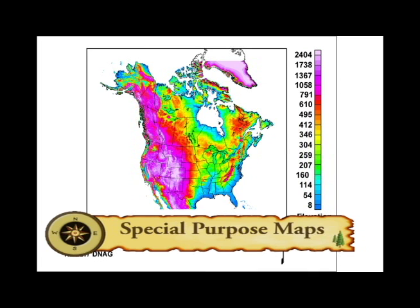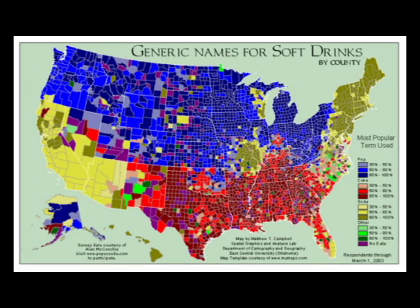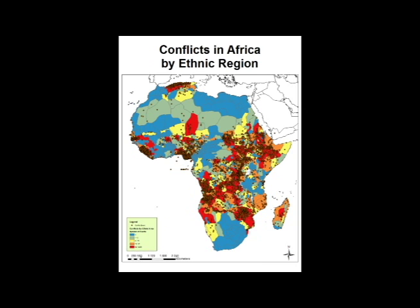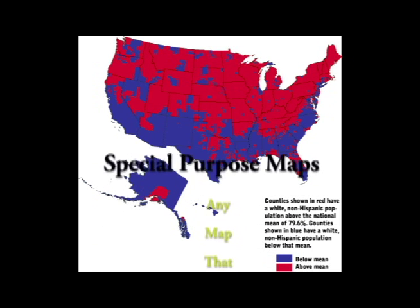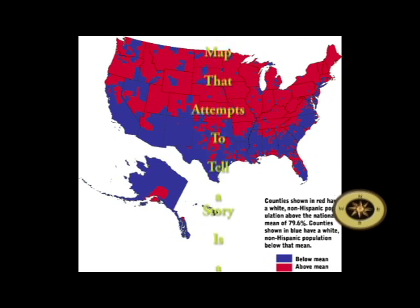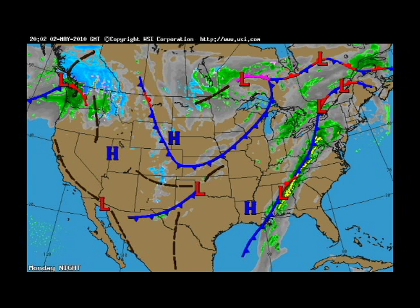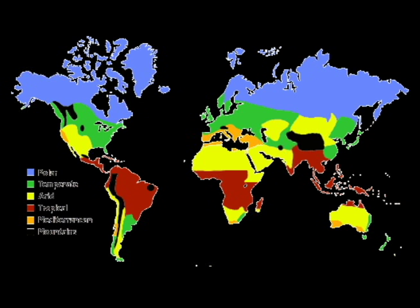Physical maps can also show locations of natural plant life, water currents, and wind patterns. Special purpose maps are designed to share specific information clearly with the reader. Examples of this are cultural maps, weather maps, demographic maps, and things like that. Anything that attempts to tell a story through a map is known as a special purpose map. Within each of these categories there are different types — weather maps, climate maps, topographic maps, etc.